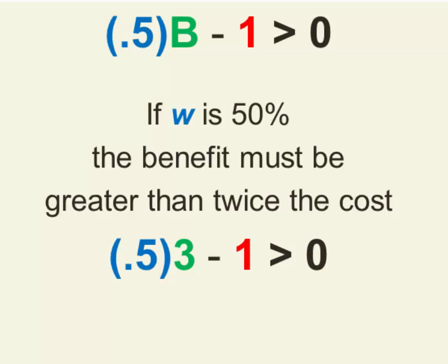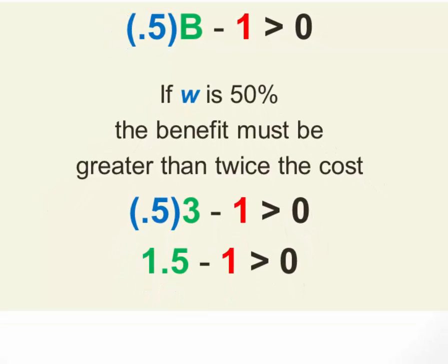So, the cost is 1, if we make the benefit 3, then certainly the inequality holds, because 0.5 times 3 is 1.5. And if we subtract 1 from that, we've still got 0.5 left, and 0.5 is greater than 0. So if we're thinking in terms of whole offspring, and W is 50%, and the cost is 1, the benefit has to be 3 or higher.